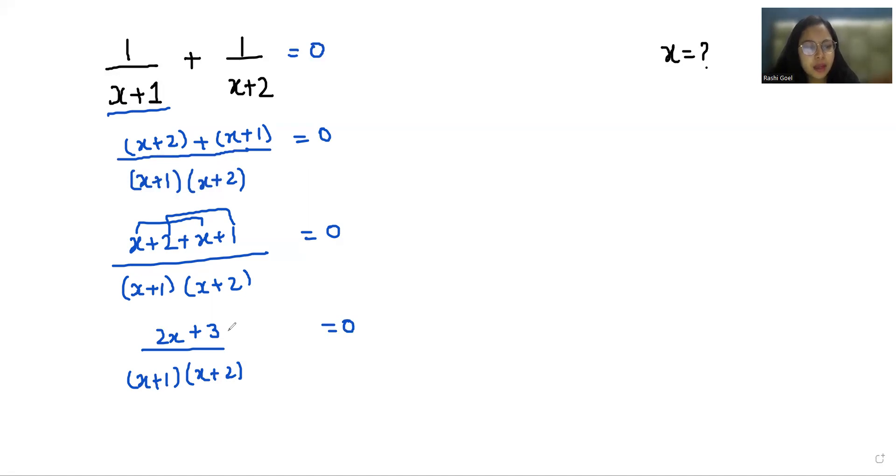Now I am going to multiply with x plus 1 times x plus 2 both sides. So we can cancel out this and 0 times x plus 1 times x plus 2 is also 0. So this gave us 2x plus 3 is equals to 0.